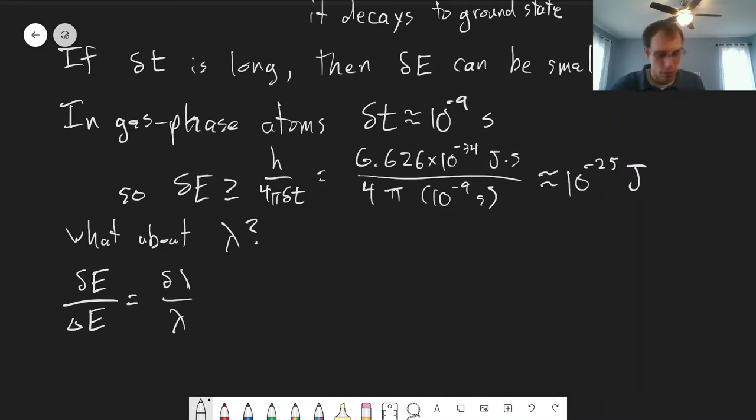So we can use this property to find our difference in energy here. So we can take our 10 to the minus 25 joules, and let's pick a particular wavelength. Let's say we're looking at sodium. We're going to look at that same transition we were looking at for the temperature stuff.